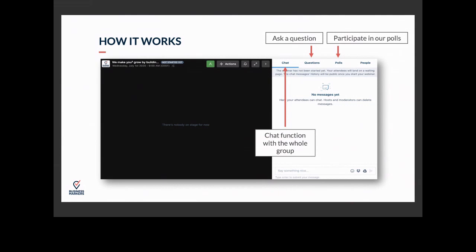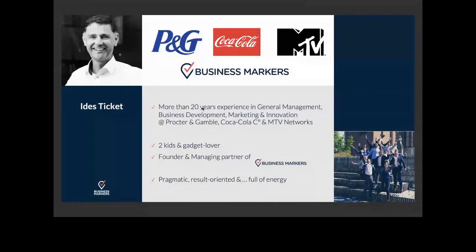Our guest speaker for today is Edes Ticket. Edes has more than 20 years of experience in general management, business development, marketing and innovation at Procter & Gamble, Coca-Cola Company, and MTV Networks. He has two kids and he's a gadget lover. He's founder and managing partner of Business Markers — very pragmatic, result-oriented and full of energy, as you will see. Today he's going to explain the one-page business plan called the OGSM. So now I'm going to pass the floor to Edes Ticket.